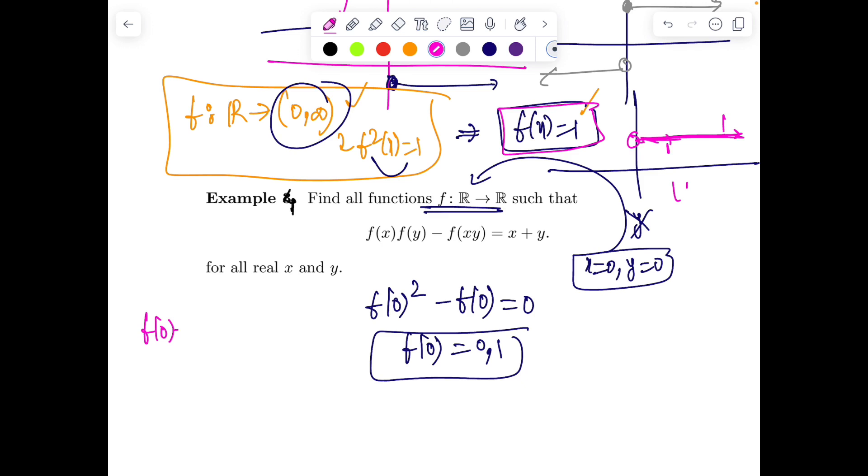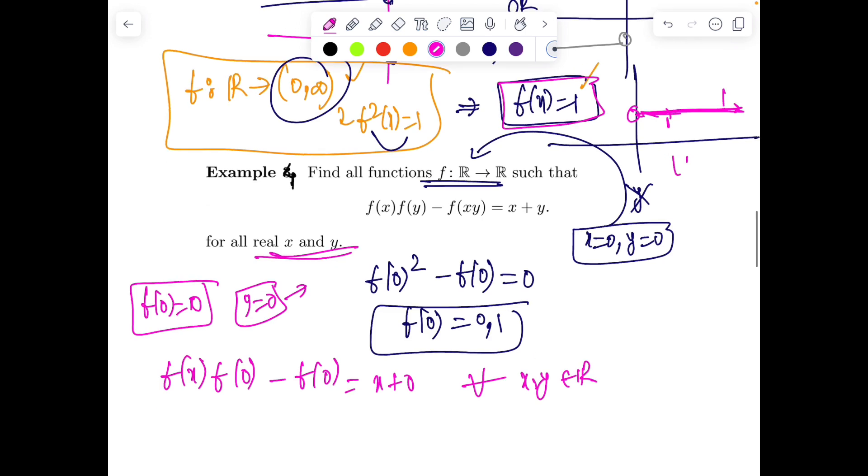Function is operating from ℝ. x = 0, y = 0 gives f(0)² - f(0) = 0, so f(0) is either 0 or 1. We got two values. Take two cases. Case 1: when f(0) = 0. Put y = 0, then f(x)·f(0) - f(0) = x, which gives f(x) = 0. This must be true for all x.